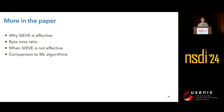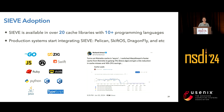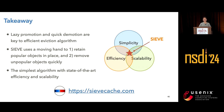If you want to try out the SIEVE algorithm, there are already over 20 cache libraries with more than 10 different programming languages. One of our SIEVE users reported that after switching their cache algorithm to SIEVE, they observed a 33 times cache miss reduction and 16% CPU savings — which is surprising. To conclude: SIEVE is the simplest eviction algorithm that achieves both lazy promotion and quick demotion. It uses the moving hand to retain popular objects in place and remove unpopular objects quickly. It's simple, efficient, and scalable. Thanks for listening — I'm happy to take any questions.